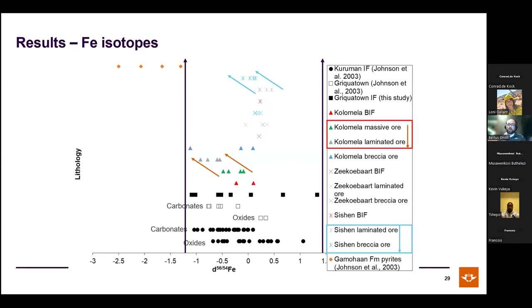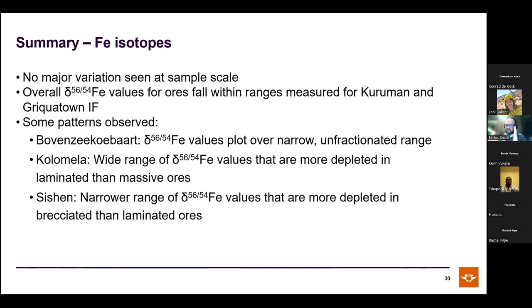More porous ore types tend to incorporate lighter iron isotopes. To re-fractionate isotopes locked in iron formation, a reductive process must dissolve and mobilize iron — the same is true for cerium. At the sample scale, isotopes within the same sample look very similar, but between ore types at a larger scale, patterns are seen.